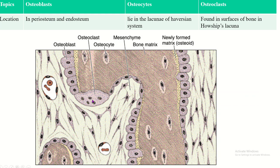The location of the bone cells: the osteoblast is located in the periosteum and endosteum, while the osteocyte is located within the bone matrix. There is a depressed area within the bone matrix called the lacunae, and within the lacunae the cell body of the osteocyte is present. Canaliculi radiate from the lacunae and contain the processes of the osteocyte. The osteoclast is also found on the surface of the bone, like the osteoblast, and is present within a Howship's lacuna.